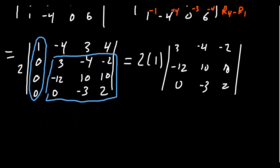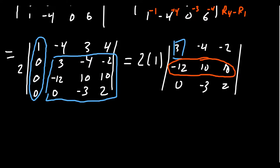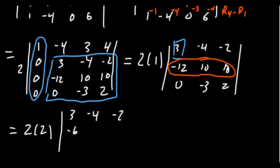Our pivot position is now in the second row. Since everything in the second row is divisible by 2, let's factor out a 2 from that row. So we now have 2 times 2 = 4 out front, and the second row becomes 3, −4, −2; the third row (after factoring out 2) becomes −6, 5, 5; and the last row stays 0, −3, 2. We're going to do a replacement: row 2 plus 2 times row 1.